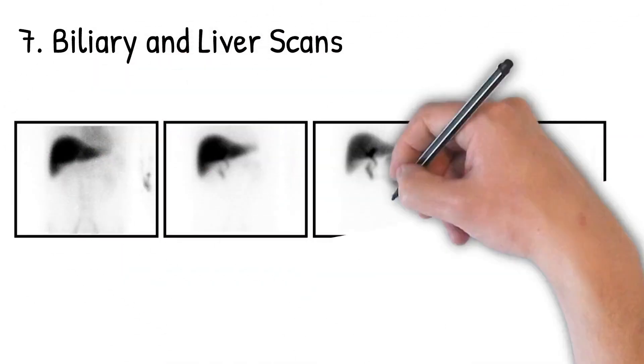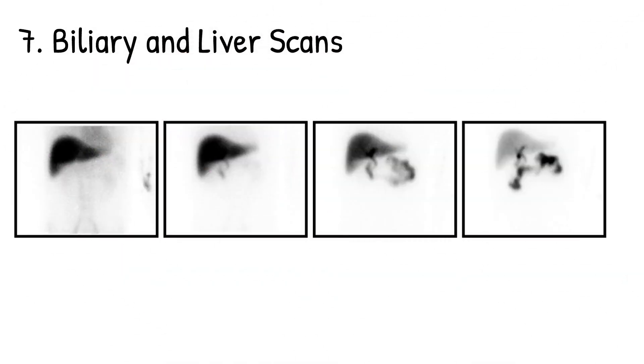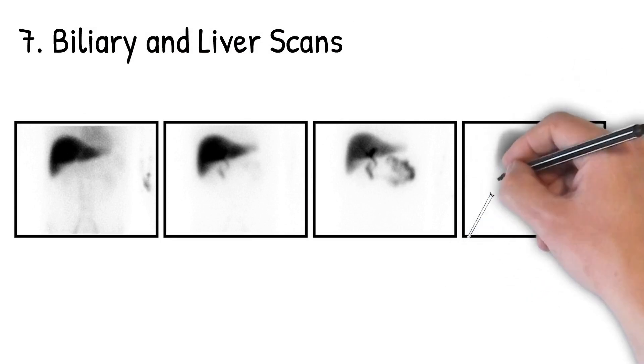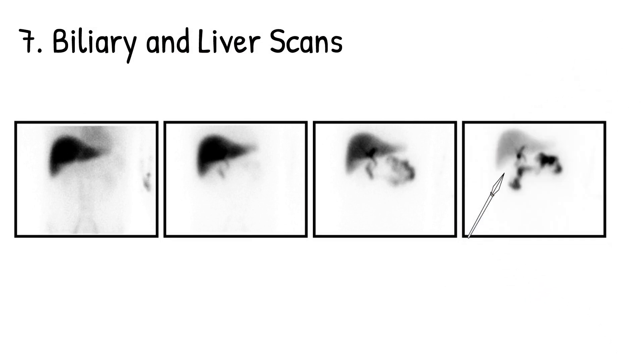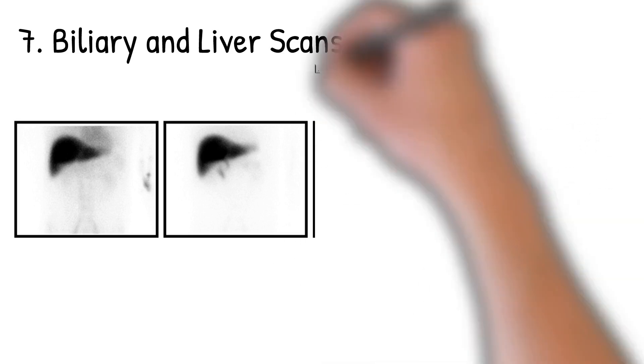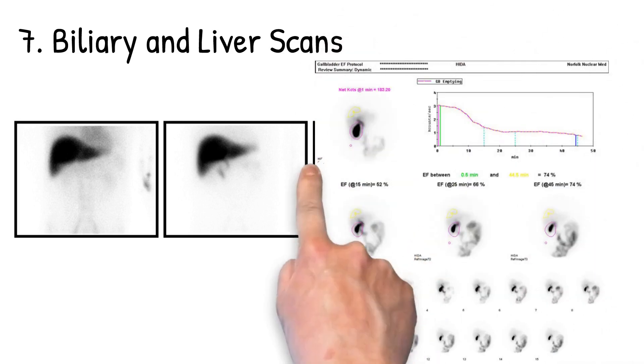Biliary and liver scans are also very important. Here we can give a tracer that's eliminated via the liver and the biliary system. In this case, there's no gallbladder, which would indicate cholecystitis. We can give morphine augmentation, which differentiates acute from chronic cholecystitis.